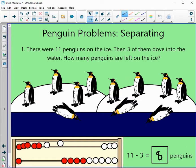We can also use our picture on our paper to help us. So there are 11 on the ice. 1, 2, 3, 4, 5, 6, 7, 8, 9, 10, and 11. That's how many we have.